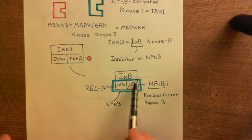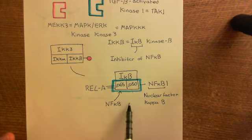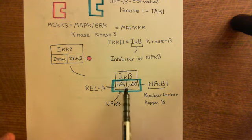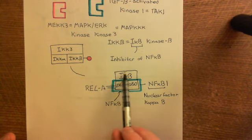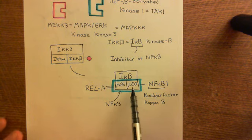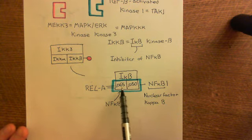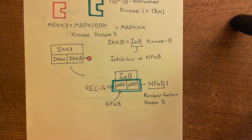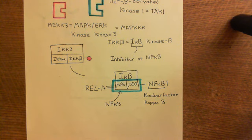This dimer of P65 and P50 would go into the nucleus and activate transcription of certain genes, if only it were released from the inhibitor of NF-κB protein. The inhibitor of κB protein keeps this NF-κB dimer firmly in the cytoplasm. If you break the inhibitor of κB off from P65 and P50, it stops the inhibitor from preventing NF-κB from going into the nucleus. The NF-κB will then go into the nucleus and activate transcription of genes causing type 1 activation. We'll continue this discussion in the next video.